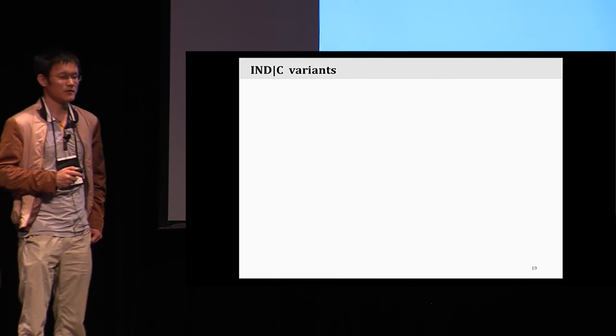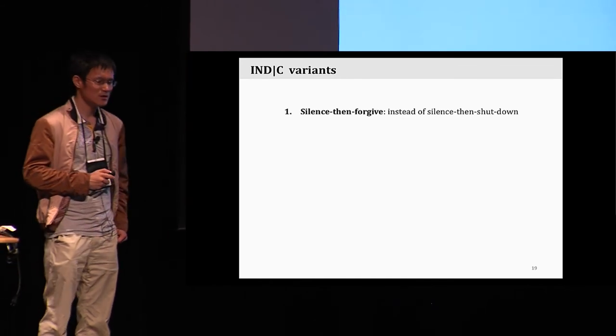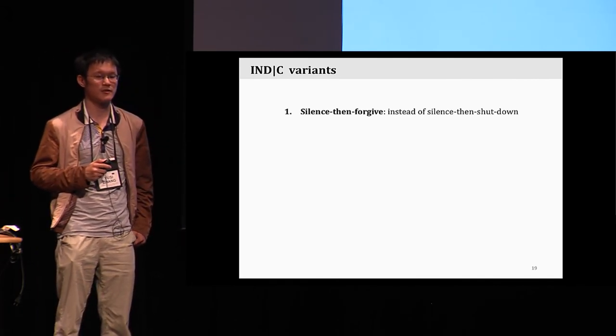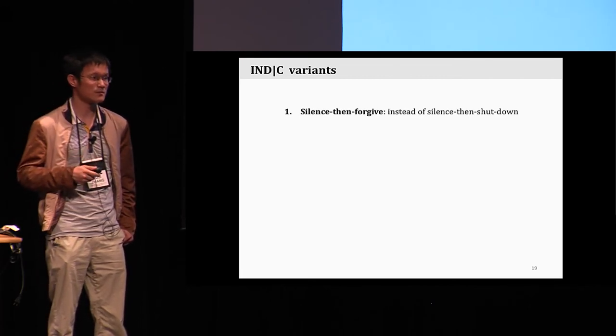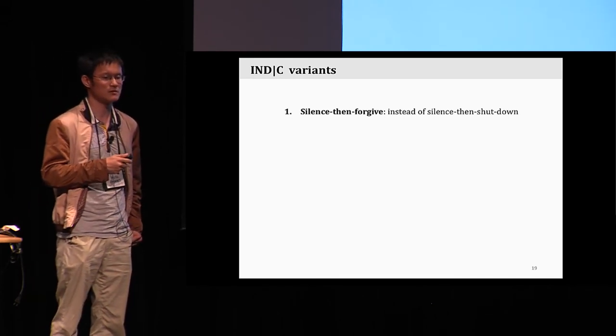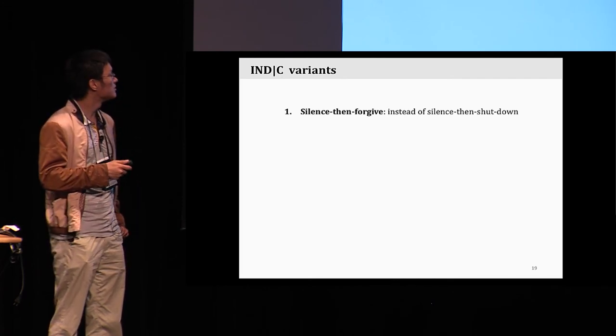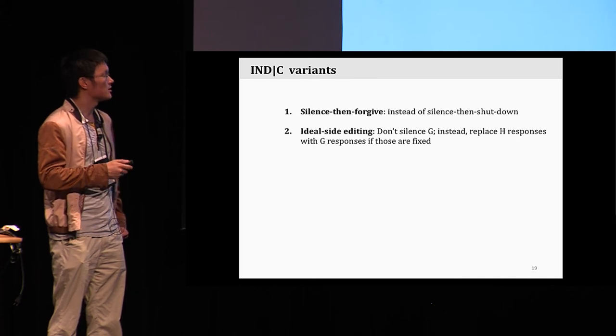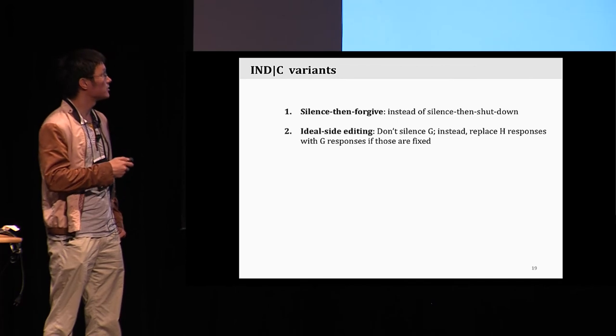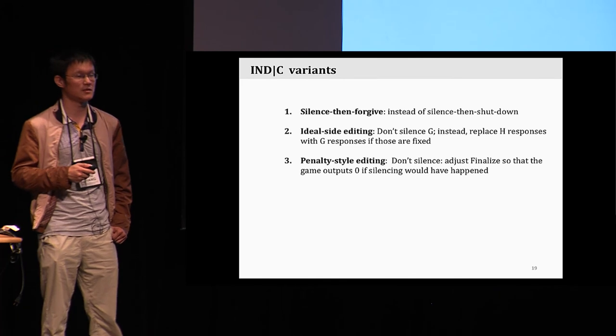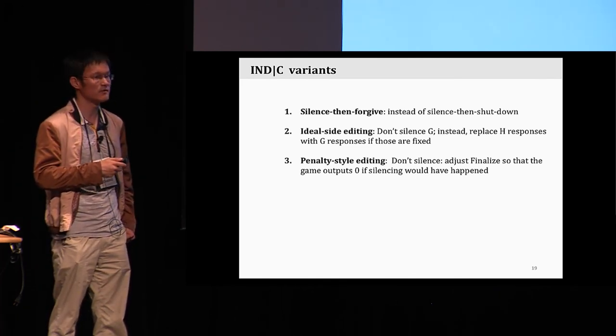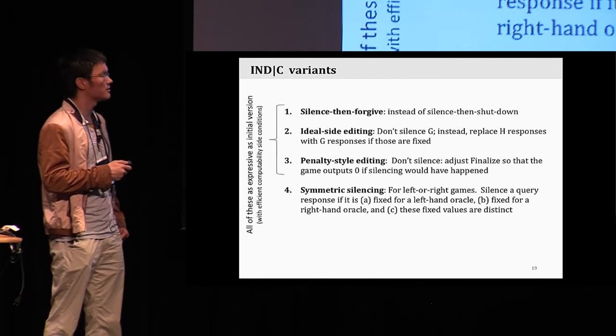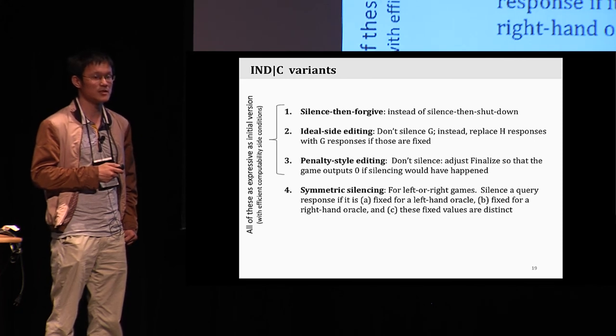So finally, let me conclude with some of the possible variants for INDIC framework. Everything I just talked about actually is about one central question. How do we formalize the silencing function to reflect the idea of excluding trivial wins? There are many definitional choices. Apart from our silencing function, which is a silenced and shut down style, we can instead silence once but allow additional queries. There can be ideal side editing. We don't silence the real world, but instead we edit the ideal world responses by the real world ones. There can be penalty style editing where you simply modify the finalization procedure to penalize whenever in the transcript there is a fixedness query. There can even be symmetric silencing, let me skip this, but I want to mention that out of these four, three of them, we show that they are expressively, they're equivalently expressive as our initial version.